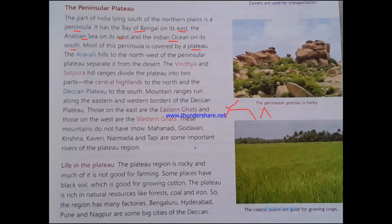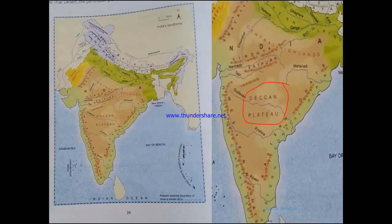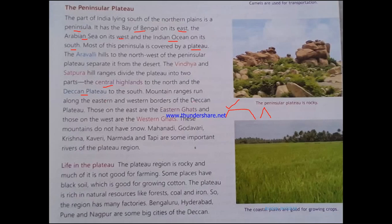The peninsular plateau of India has two parts: the Central Highlands and the Deccan Plateau. The Aravalli ranges separate the plateau from the Thar Desert, and the Vindhya and Satpura ranges divide the plateau region into the Central Highlands to the north and the Deccan Plateau to the south. Mountain ranges run along the eastern and western borders of the Deccan Plateau.